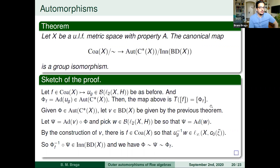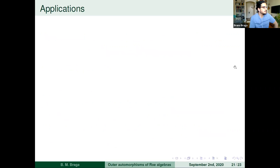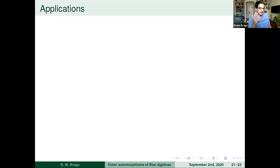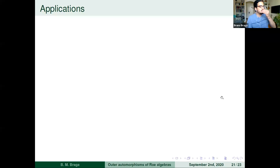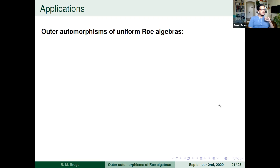Some applications. Computing these groups is incredibly hard. For the uniform Roe algebra of ℕ, only the identity class exists, so all automorphisms are inner. For ℤ, you have the identity and the flip (minus the identity), so the outer automorphism group is ℤ/2. For the coarse disjoint union of singletons, any bijection is a coarse equivalence, giving the group of permutations of ℕ that eventually coincide — finitary permutations modulo closeness.